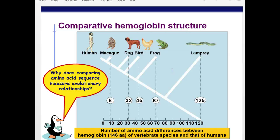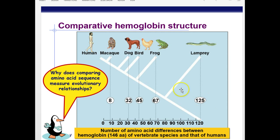Here's a chart on comparative hemoglobin structure. Hemoglobin, being a protein, is made out of chains of amino acids, so we take a look at the chains of those amino acids in different organisms and compare similarities and differences. From a human: the macaque monkey has only 8 differences, dogs 32, birds 45, frogs 67, and the sea lamprey all the way down at 125 differences — meaning that organism would be the least related to us or the one we diverged from longest ago. From there we can build family trees like this phylogenetic tree with primates.